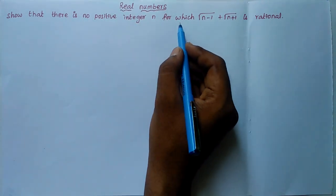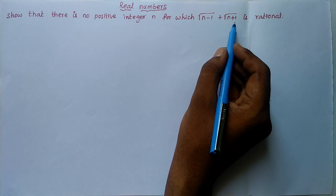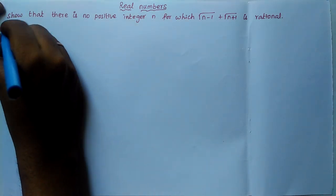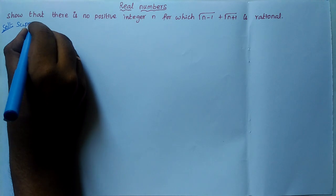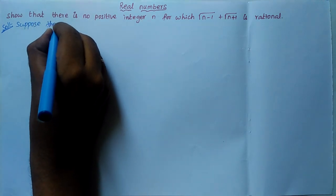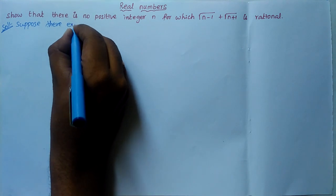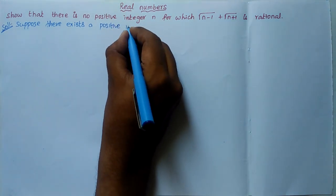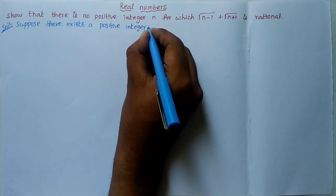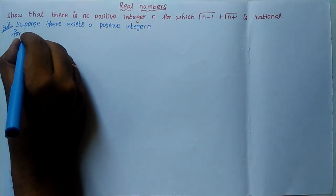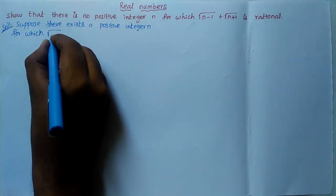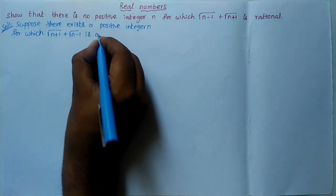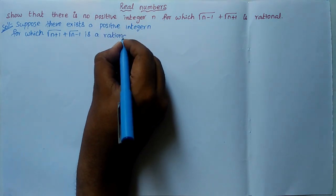We need to show there is no positive integer n for which √(n−1) + √(n+1) is rational. Suppose there exists a positive integer n for which √(n+1) + √(n−1) is rational.